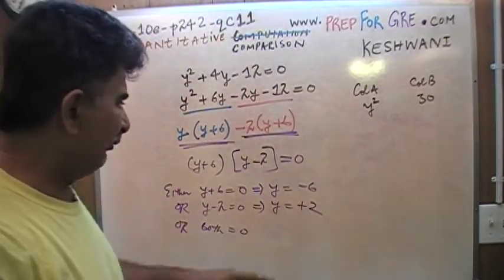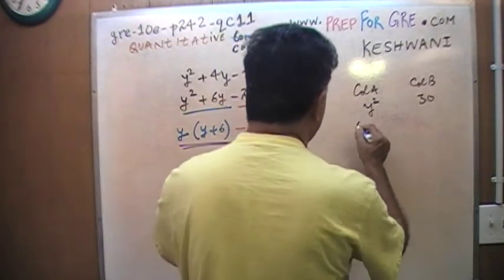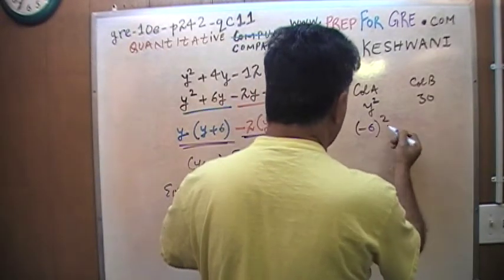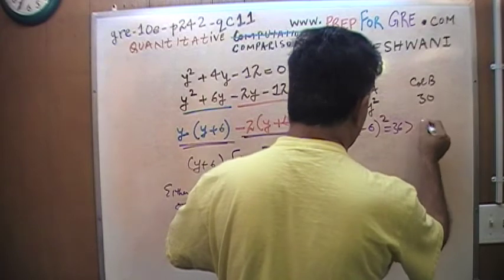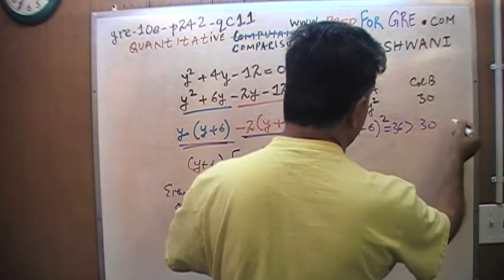So that's what we have to contemplate. If y is negative 6, then here what we're dealing with is negative 6 squared, which of course is 36, which is greater than 30. The answer would be A.